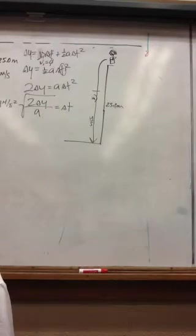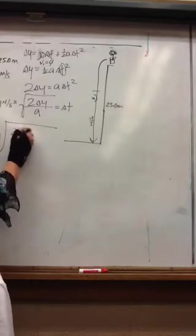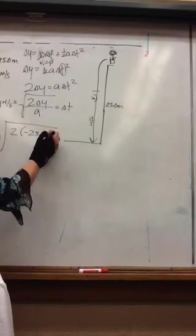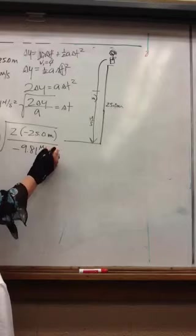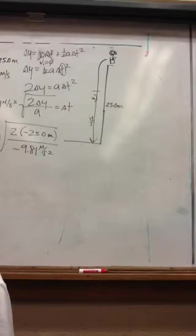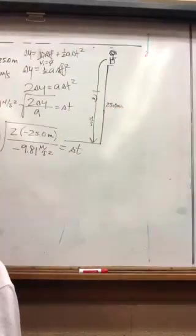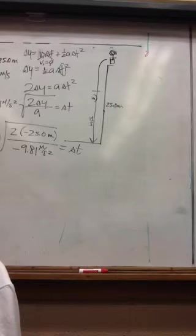So, two times negative 25.0 meters over negative 9.81 meters per second squared. Will this work out dimensionally? Yes. Because we're going to end up in what? So, those meters will cancel out. We've got seconds squared. We're taking a square root. Perfect. We end up in seconds, and that's what we want.